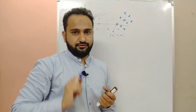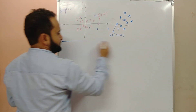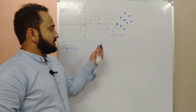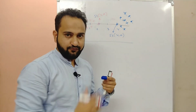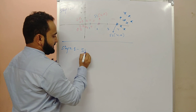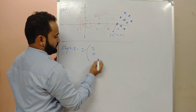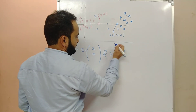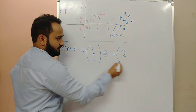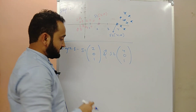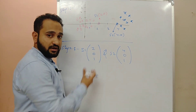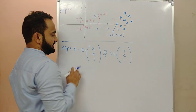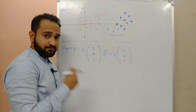Step two is to convert your support vectors into 3D form. S1 is (2, 0) and S2 is (4, 0). We just add a 1 — this is called adding bias, converting from 2D to 3D form, where z = 1. So S1 becomes (2, 0, 1) and S2 becomes (4, 0, 1) — these will be the representations of your support vectors in 3D.